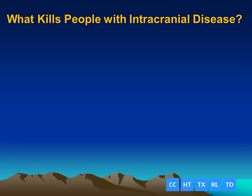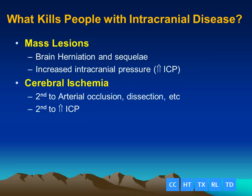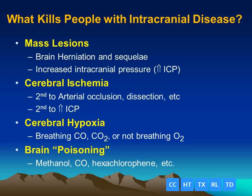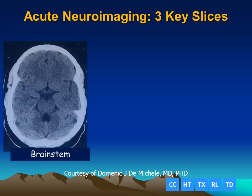What kills people with intracranial disease? Mass lesions, cerebral ischemia, cerebral hypoxia, and brain poisoning. The most important things to look for are signs of cerebral ischemia and mass lesions that cause herniation, shift, and increased intracranial pressure. The three key slices that we should observe are the brainstem, the basal ganglia, and the level of the lateral ventricles.